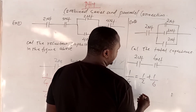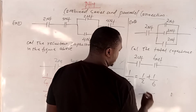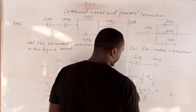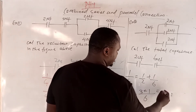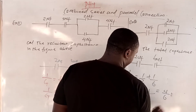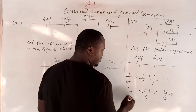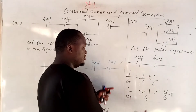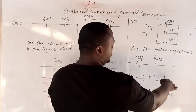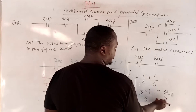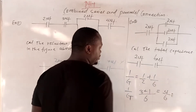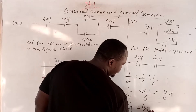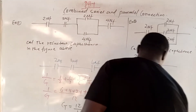The LCM here is 6, so this gives you 3 plus 1. So 1/CT = 4/6. Remember, we want CT not 1/CT. By cross-multiplying — or taking from bottom to top and top to bottom — your CT is 6 all over 4, which is 1.5 microfarad.